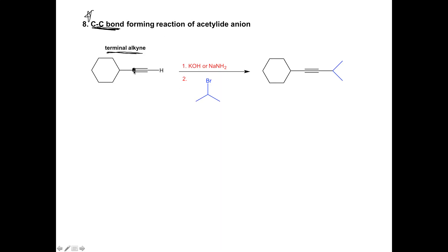What this means is we have to have a hydrogen attached to our alkyne. It turns out that any hydrogen attached to an sp-hybridized carbon is acidic. If we add a base, we can deprotonate this hydrogen to turn our alkyne into what's called an acetylide anion. That acetylide anion is a very good nucleophile. This is a two-step process. In step one, we add a base. The bases most commonly used are potassium hydroxide, NaNH2, or sodium hydroxide.